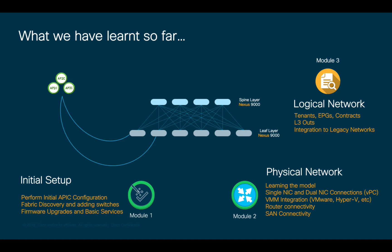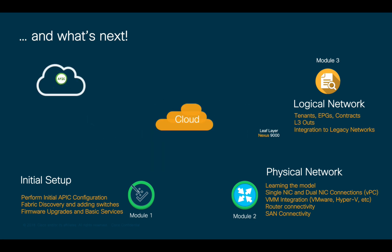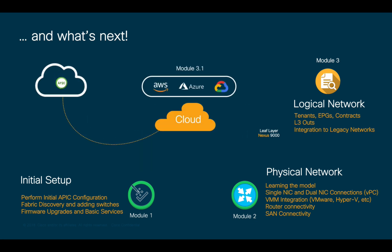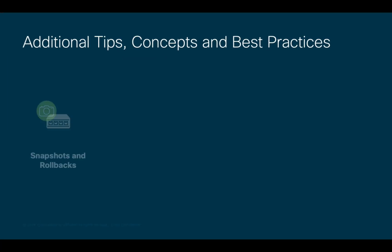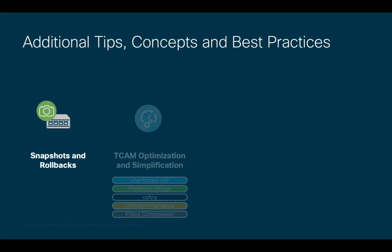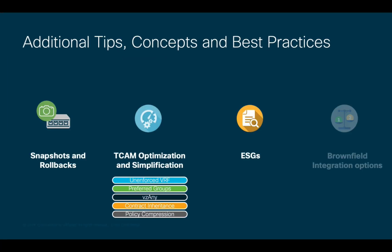I will be adding extra chapters to the module as needed, so stay tuned. In the next sub-module, we will take the same ACI concepts and apply them to different cloud providers, such as AWS and Azure, in order to accelerate cloud migrations and adoptions with less risk. But before we do that, let's cover a few recommendations, additional concepts, and best practices to wrap up this module.